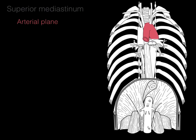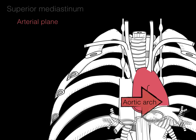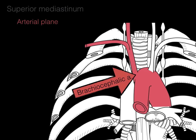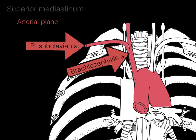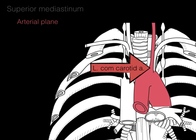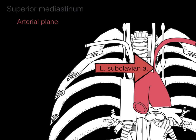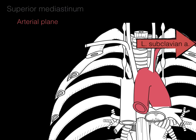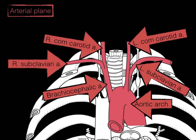Now the arterial plane: the aortic arch courses around and at its very top gives rise to three primary branches. The brachiocephalic artery (trunk) gives rise to the right subclavian artery going to the right arm and the right common carotid artery going to the right side of the brain and face. Then there's the left common carotid artery to the left side of the head and brain, and the left subclavian artery supplying the left upper limb.